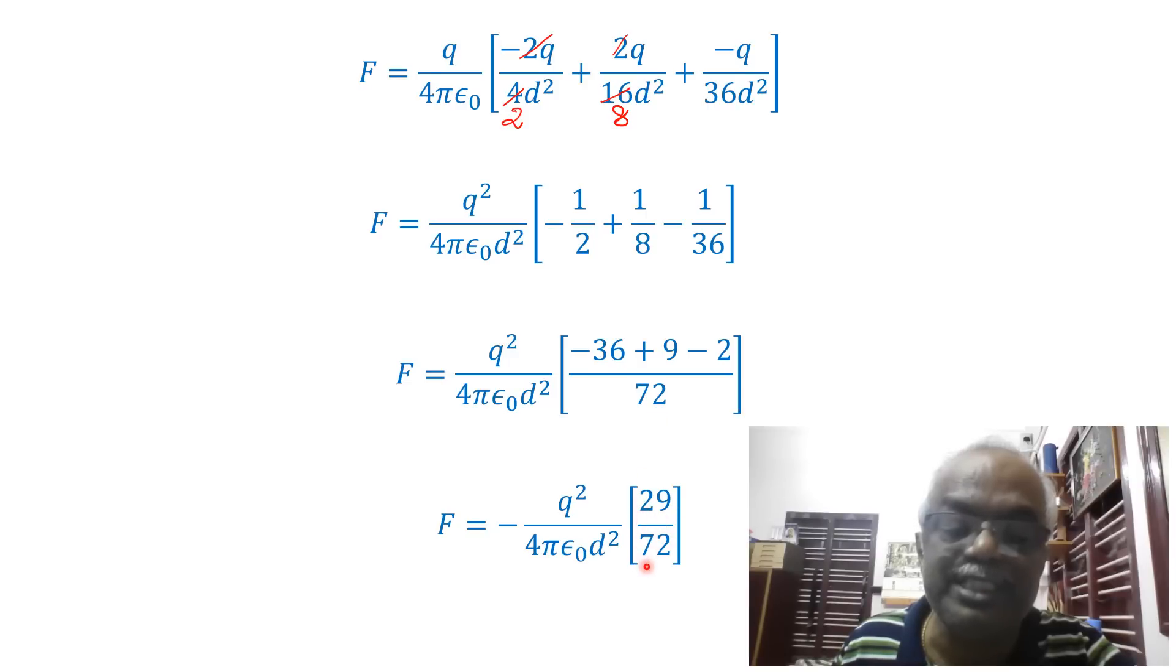This is the force on the charge Q due to the charge minus 2Q kept at that distance 2d. So total force on the charge Q is minus q squared over 4 pi epsilon naught d squared multiplied by 29 over 72. Thank you very much for watching my video and supporting me continuously.